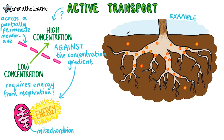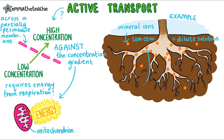So here we've got a plant root, and in the soil around it there are mineral ions. These are in solution, and plants need to absorb them so that they can grow properly. Often plants are in soil that has a low concentration of mineral ions, and because the solute is low, we say it's a dilute solution. Inside the plant roots however, there are quite a lot of mineral ions — a high concentration — which therefore means it's a concentrated solution.